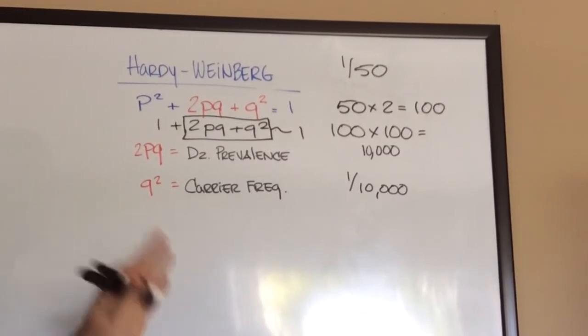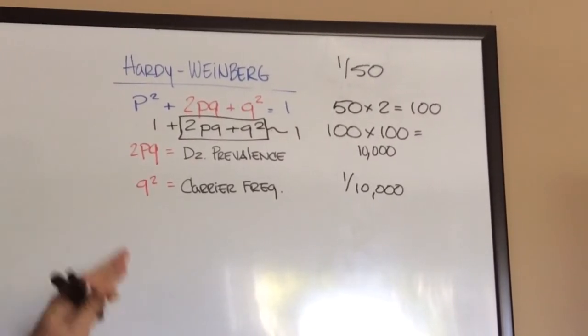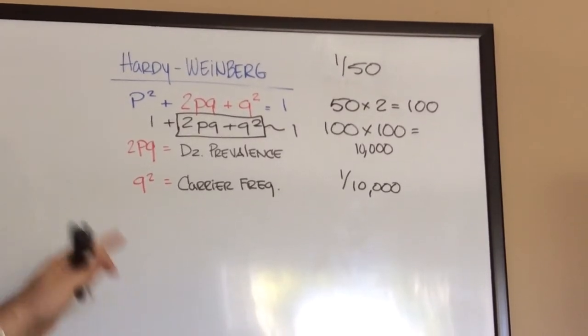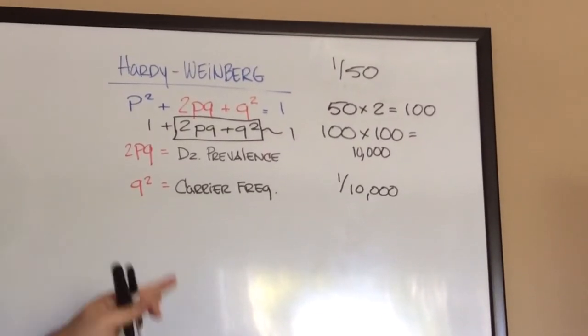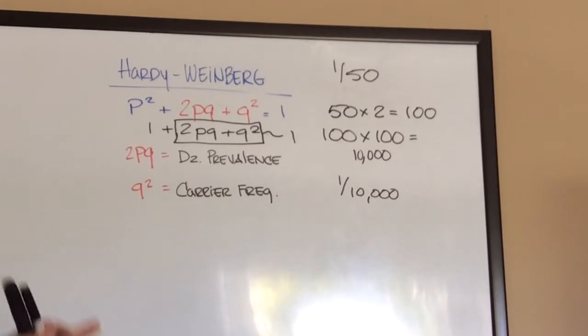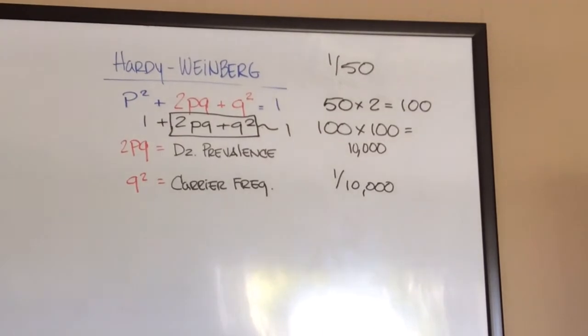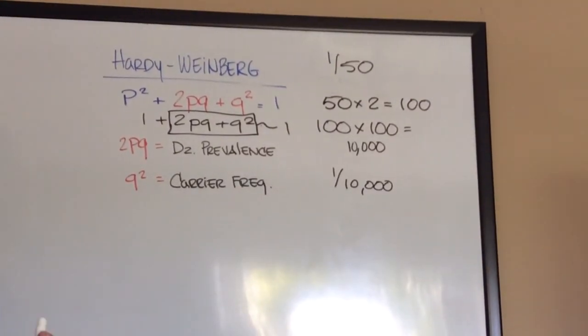Just know that you have to square root and divide by 2 to get the carrier frequency. And then you have to multiply by 2 and then multiply it by itself to get the disease prevalence. And you should get your Hardy-Weinberg equilibrium questions right most of the time. Thank you.